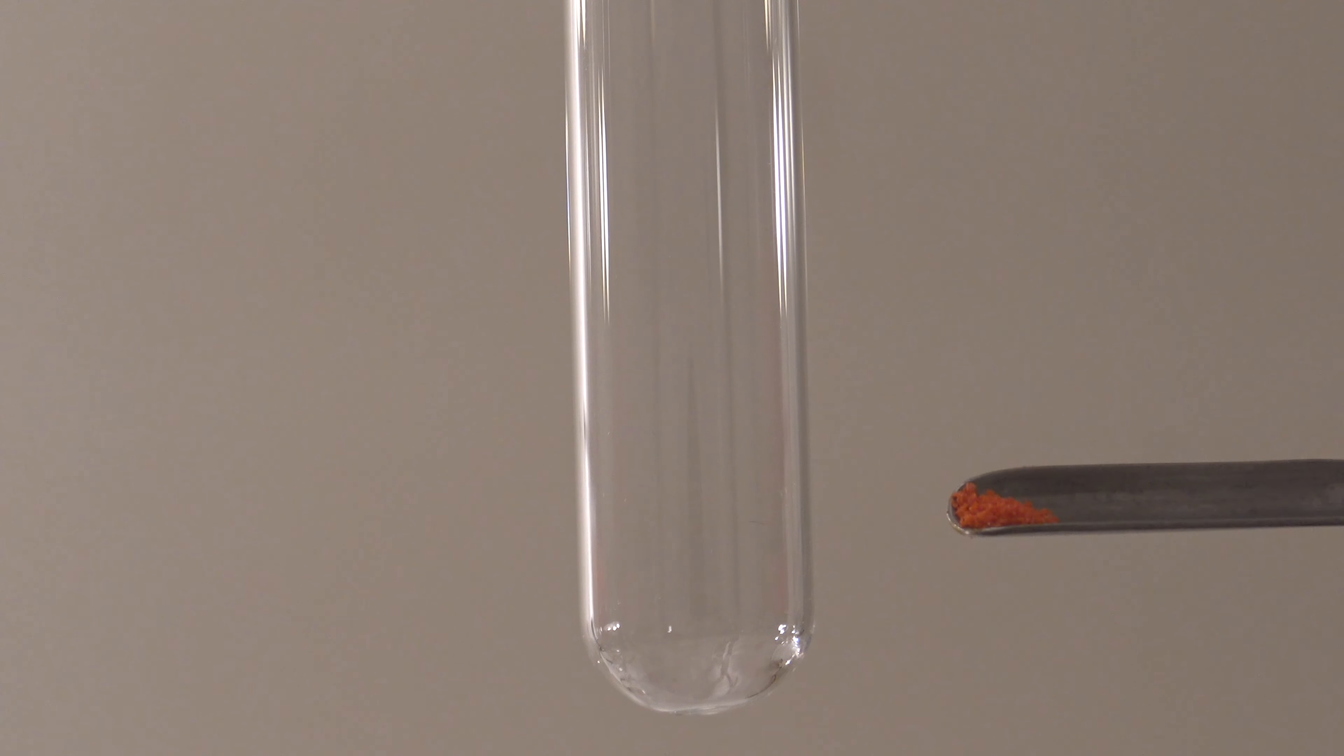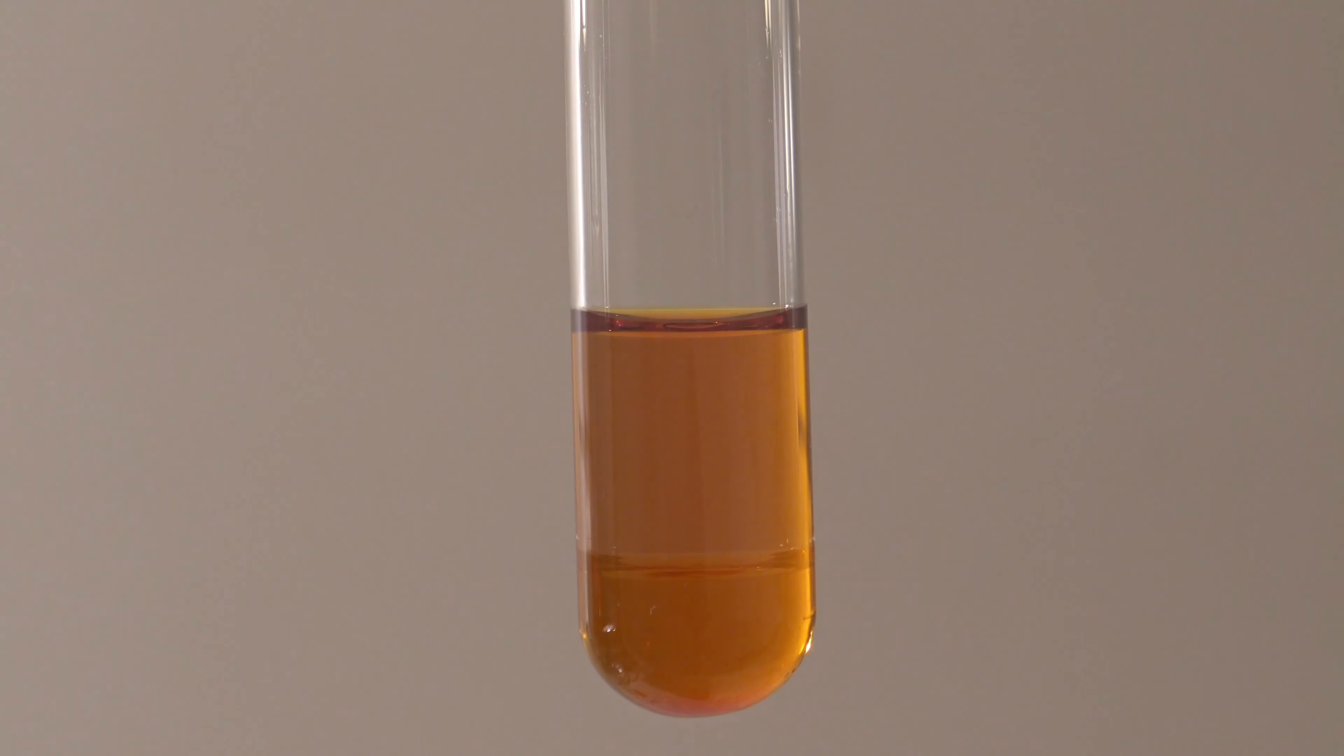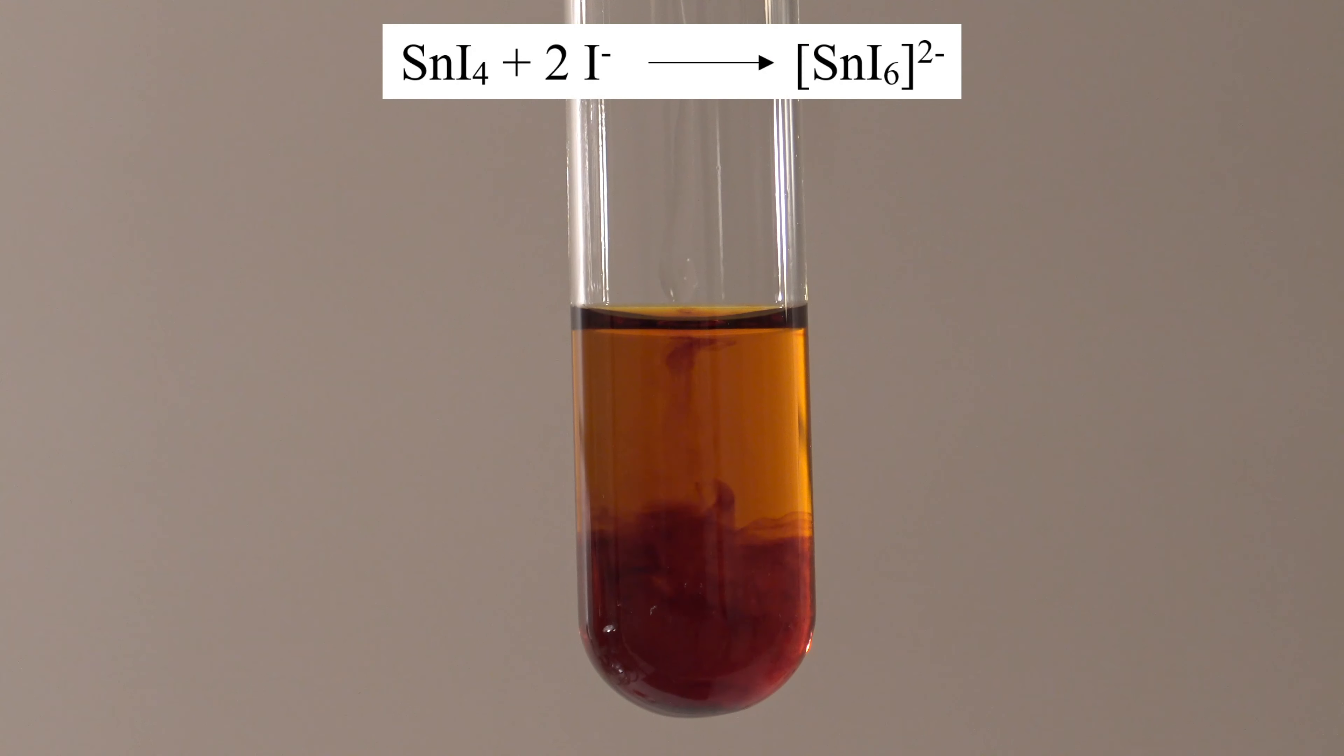Tin(IV) iodide can be used to prepare hexaiodo metal complexes. These are rare because they are unstable. According to some literature, it only has to be dissolved in an organic solvent and a saturated solution of sodium or potassium iodide has to be added. This should cause the formation of the complex hexaiodostannate.